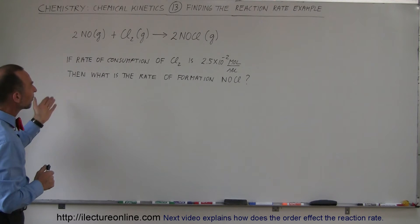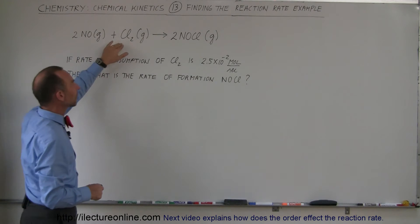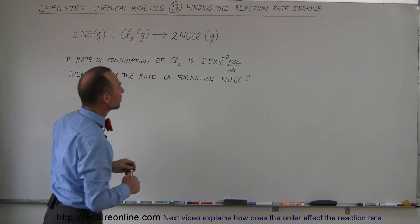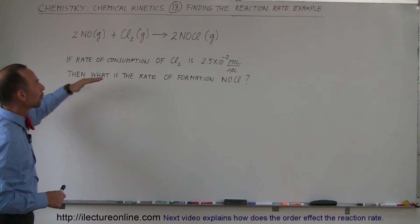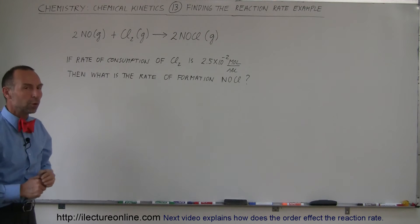Now what if the rate of consumption of the chlorine gas is 2.5 times 10 to the minus 2 moles per second? What will be the rate of formation of nitrosyl chloride?